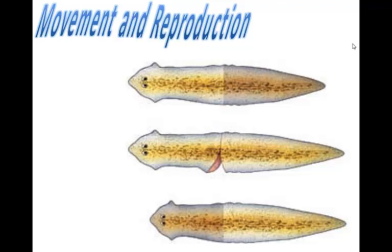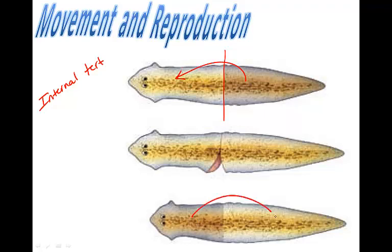Flatworms are hermaphrodites. They reproduce sexually by exchanging sperm and eggs, with fertilization occurring internally. In marine flatworms, zygotes are protected in a cocoon and are released into the water where they hatch within a few weeks. Regeneration is a way that flatworms may reproduce asexually. A planarian that is cut in half horizontally can grow a new head from the tail end or a new tail from the head end, forming two new organisms.